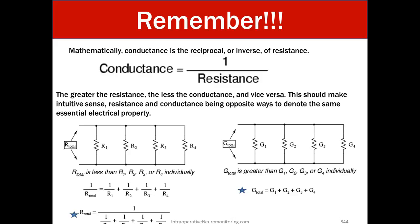Whereas conductance is greater than G1, G2, G3, G4 individually because conductance set up in this parallel is additive. So we have G1, G2, G3, and G4.